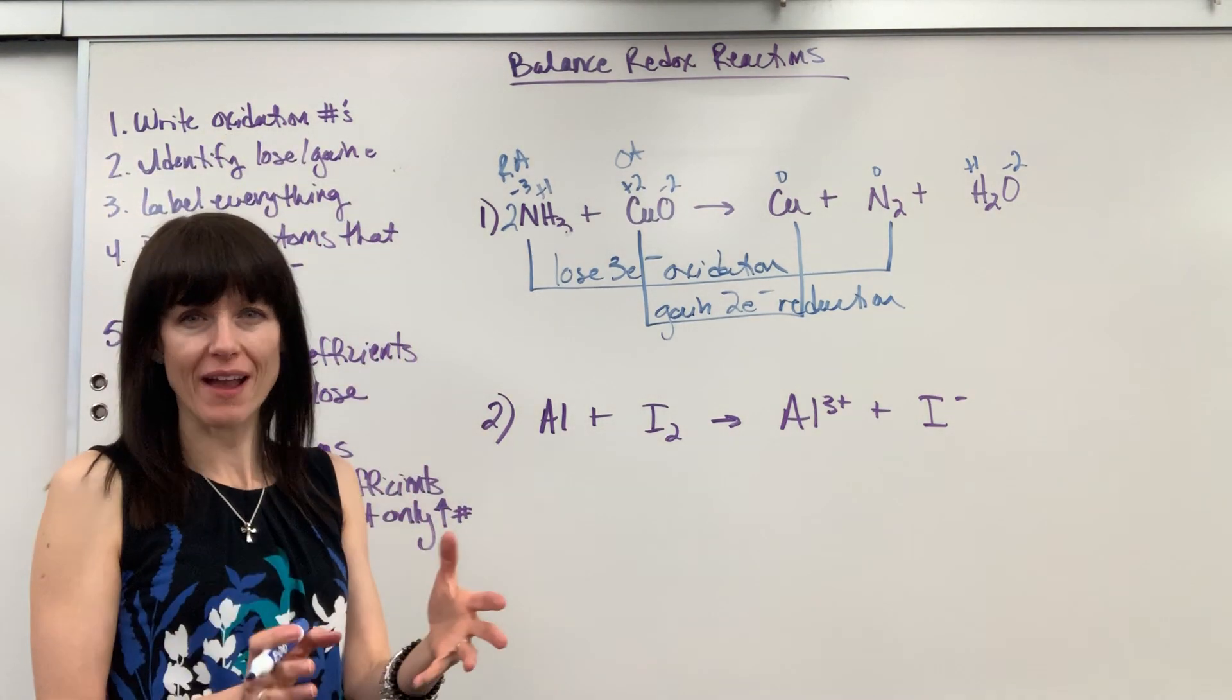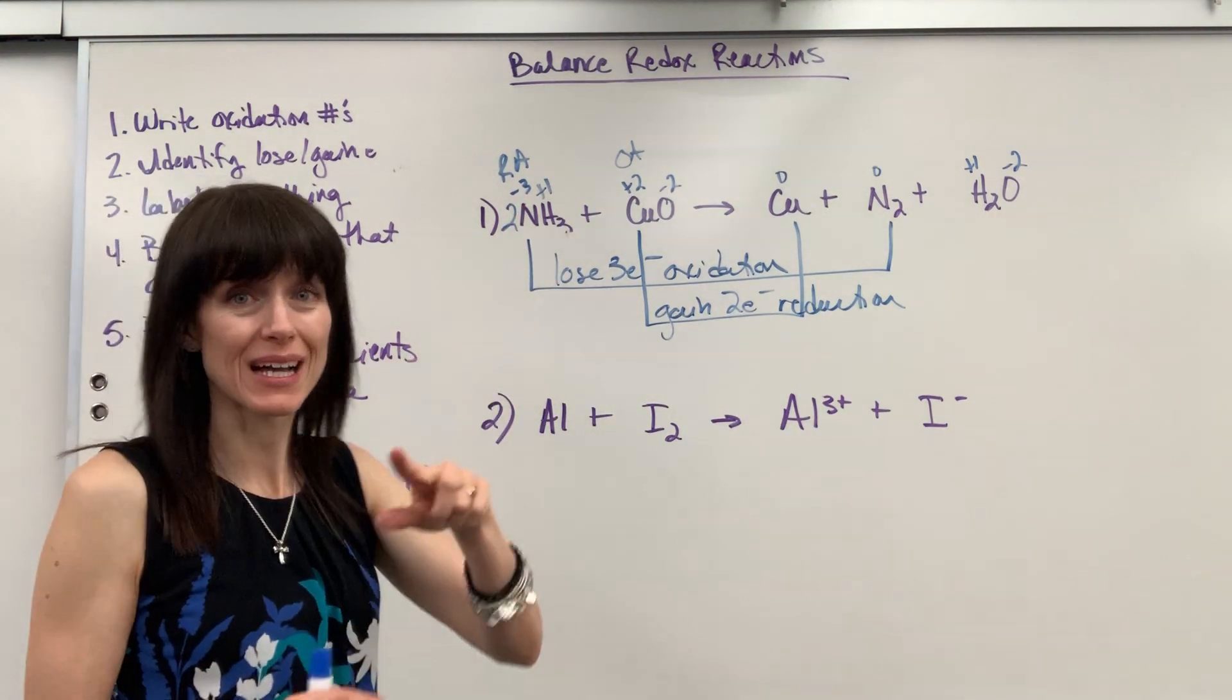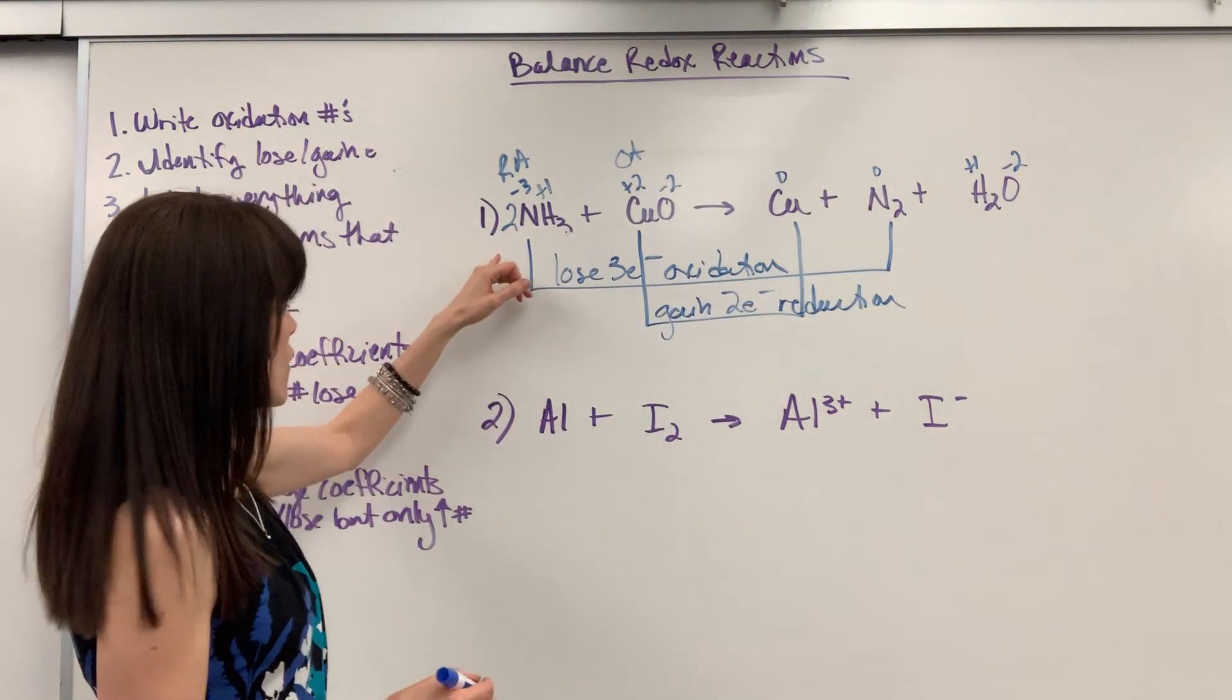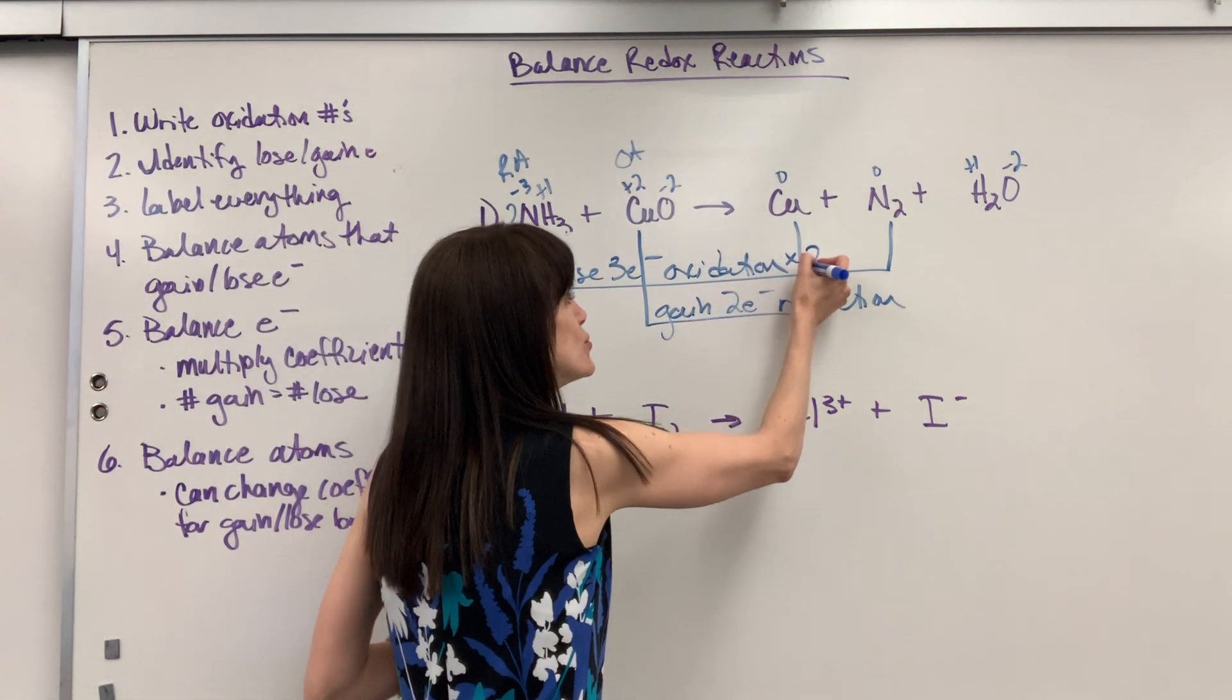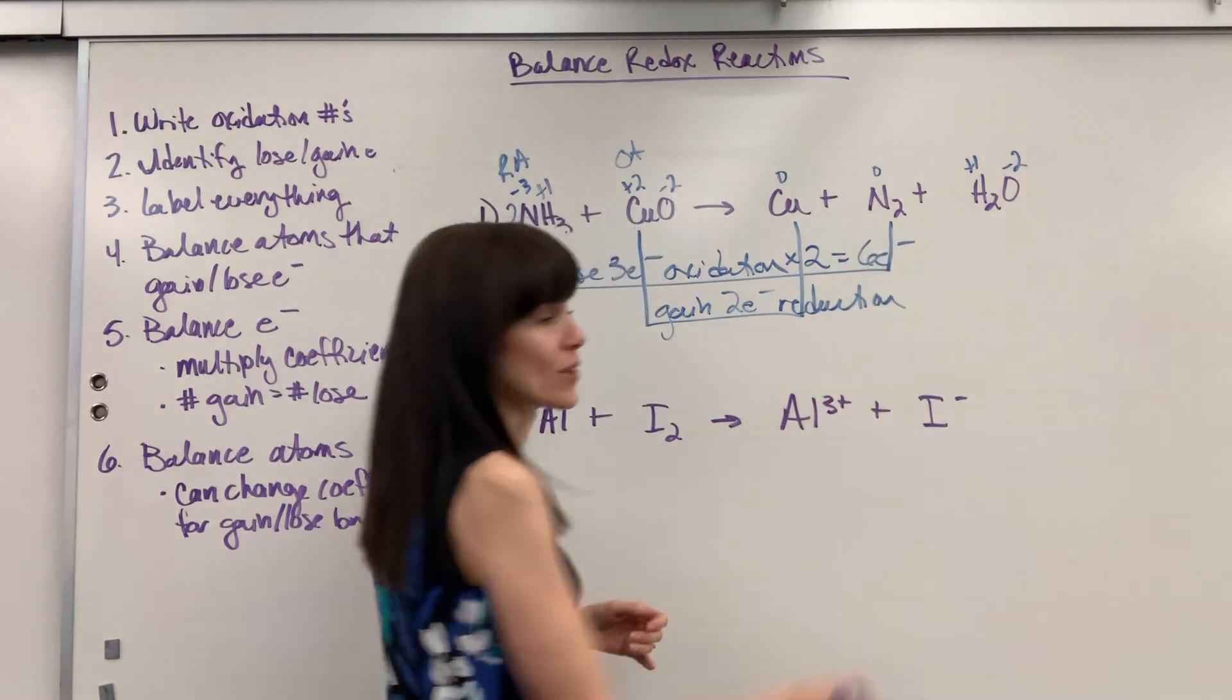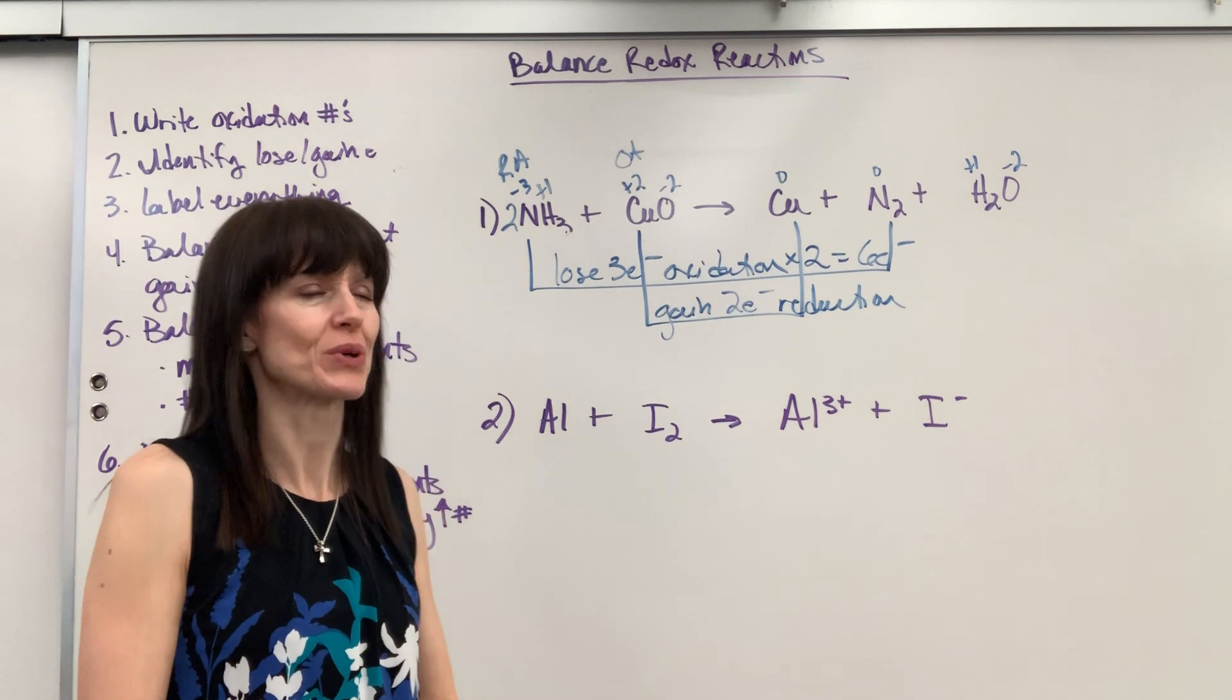Now by putting the two coefficient, that changes my electrons. Remember we always write oxidation numbers for one atom. One nitrogen's a minus three going to the zero. So if I have two nitrogens, it's going to be three electrons times two atoms equals a total of six electrons lost. A total of six electrons lost. You can see why this is so important.